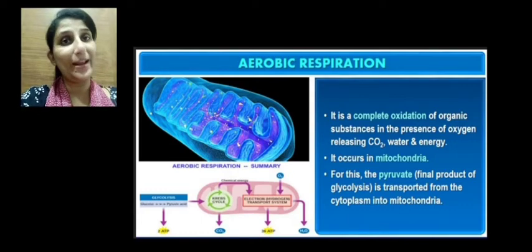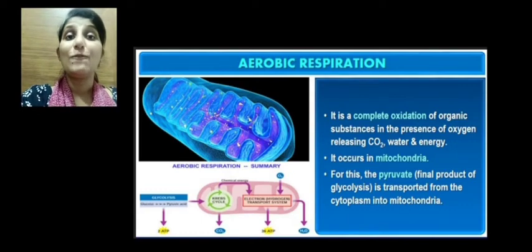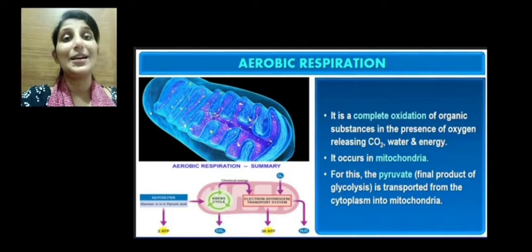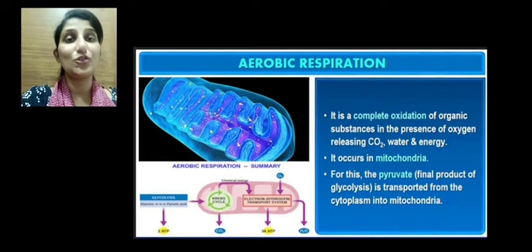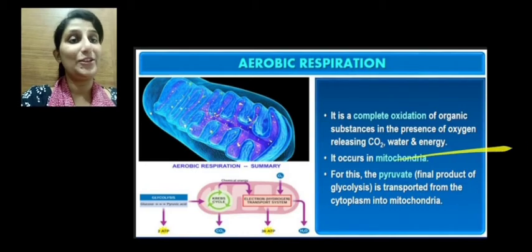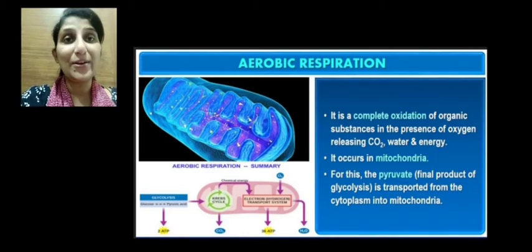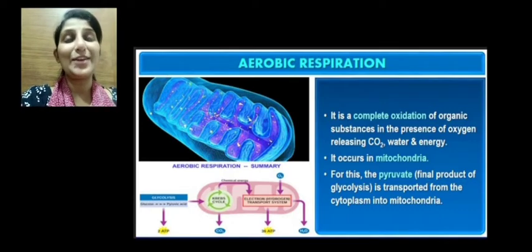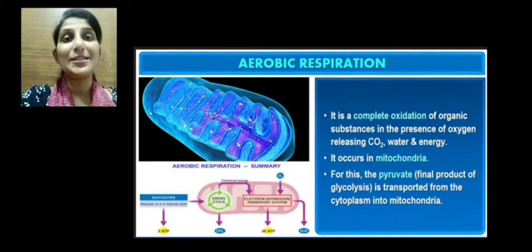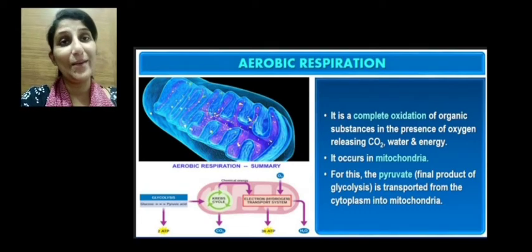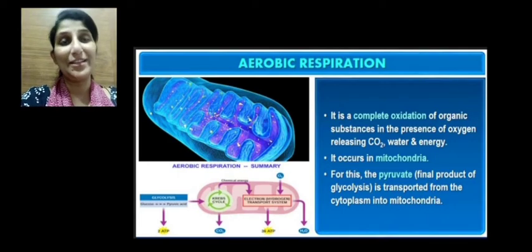Glycolysis takes place in the cytoplasm, but the rest of the process is completed in the mitochondria. The pyruvic acid present after glycolysis is in the cytoplasm, so pyruvate has to be transported from the cytoplasm to the mitochondria. This is why the mitochondria is called the powerhouse of the cell.